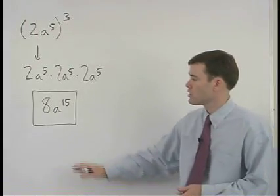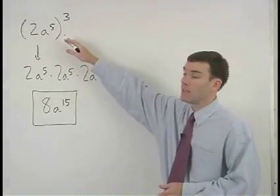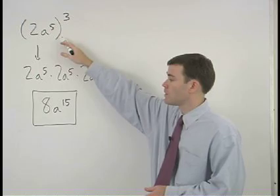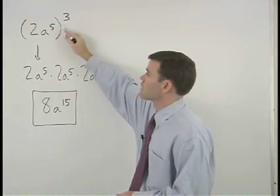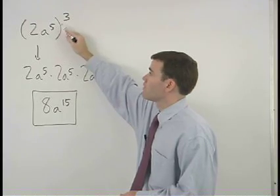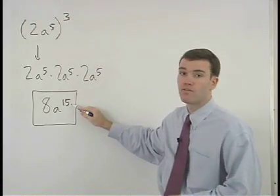Now let's take a look at the relationship between our answer and the original problem. Notice that we simply multiply the exponents together, 5 times 3 to get 15.